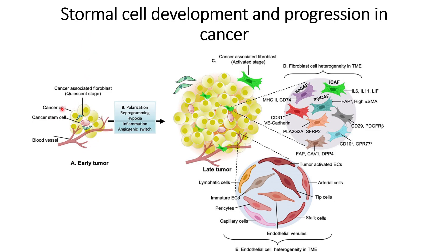In the case of a cancerous patient, what happens in the early tumor stage is that there is some development of cancer-associated fibroblasts. However, they are not active — they are in the quiescent stage, and they can be found surrounded by the cancer cells, as we can see in this figure.